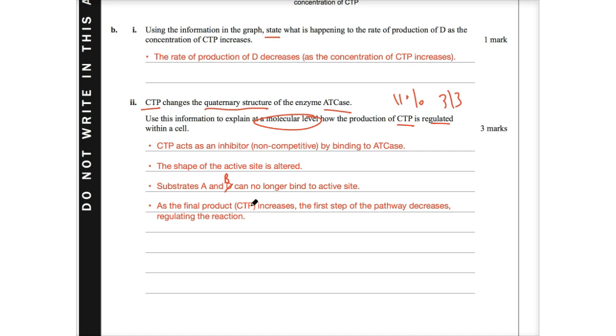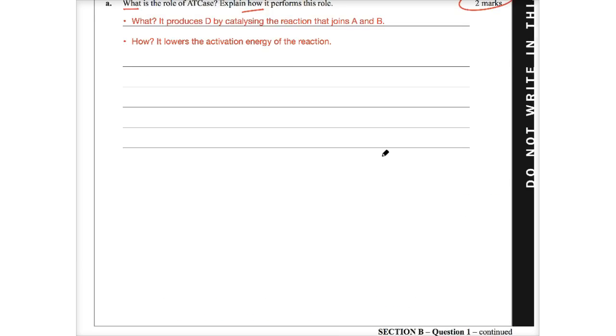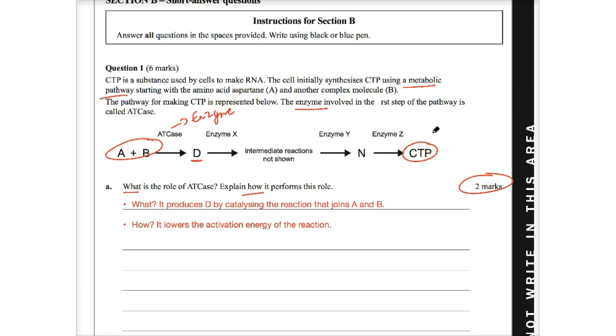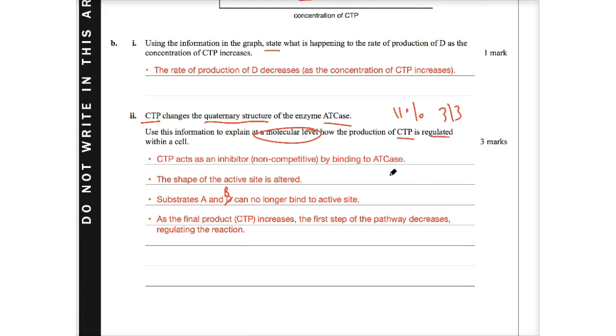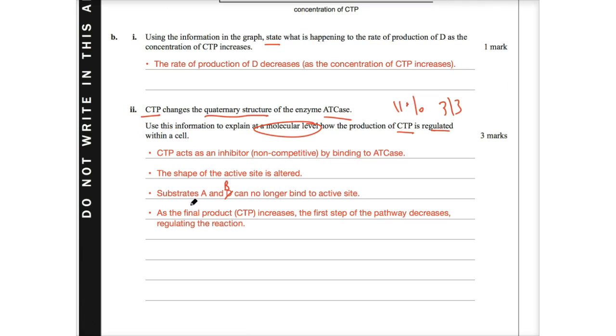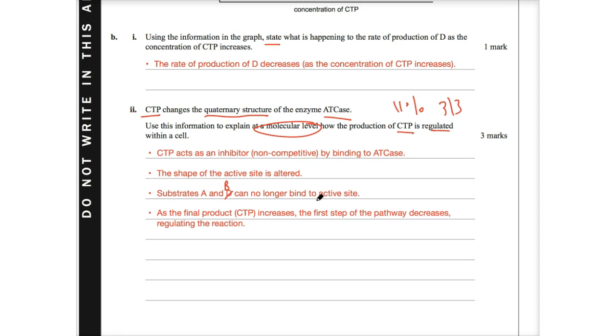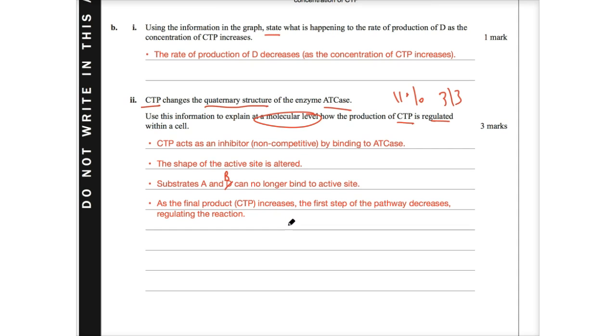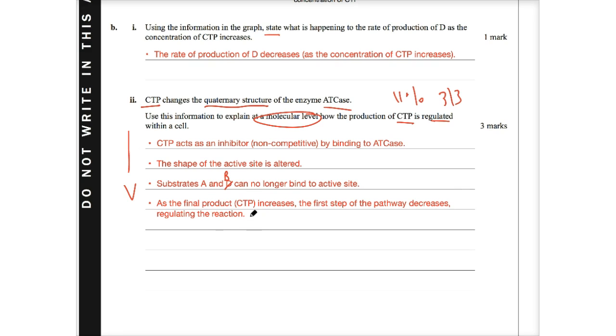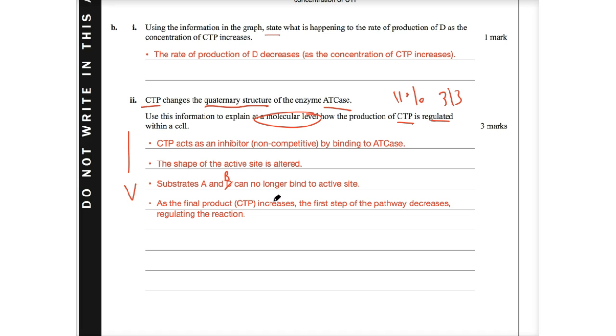And so what is actually happening here, it's a self-regulated system. Because we know if we scroll all the way back up, that CTP is the product. So if that increases, that means that this decreases in activity. So if I go through to the bottom here, it's basically saying that, just to bring it all together, that as the final product CTP increases, the first step of that pathway decreases just due to the decreased activity of ATCase. Therefore, that regulates the reaction itself. And so three marks, I've given four clear dot points. But still, the premise still remains, I've tried to be as clear and concise as possible. But I feel like that this is a logical progression, a logical answer. And you're more likely to get the mark in this process.